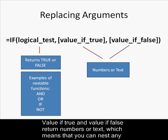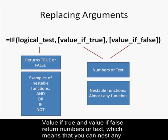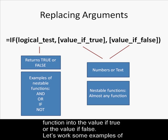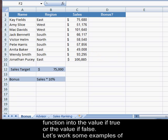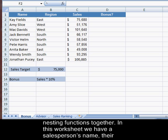Value if true and value if false return numbers or text, which means that you can nest any function into the value if true or the value if false. Let's work some examples of nesting functions together.